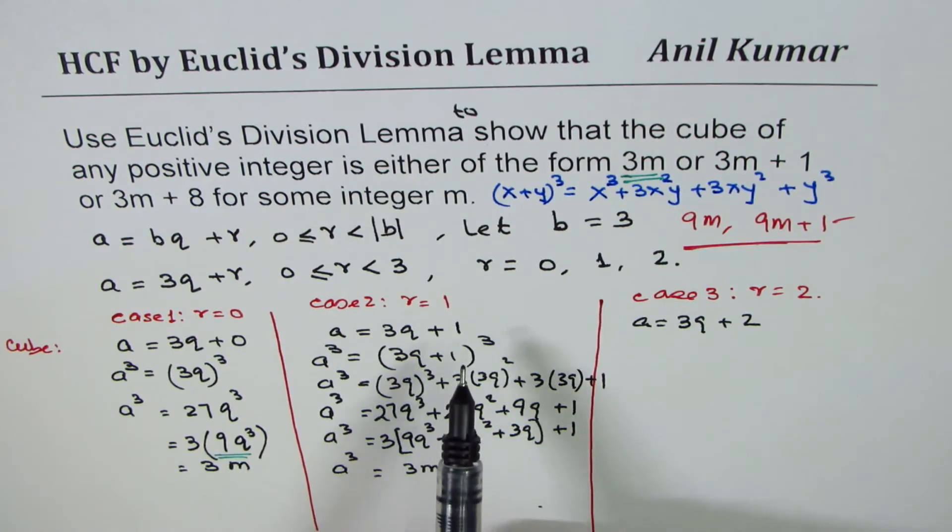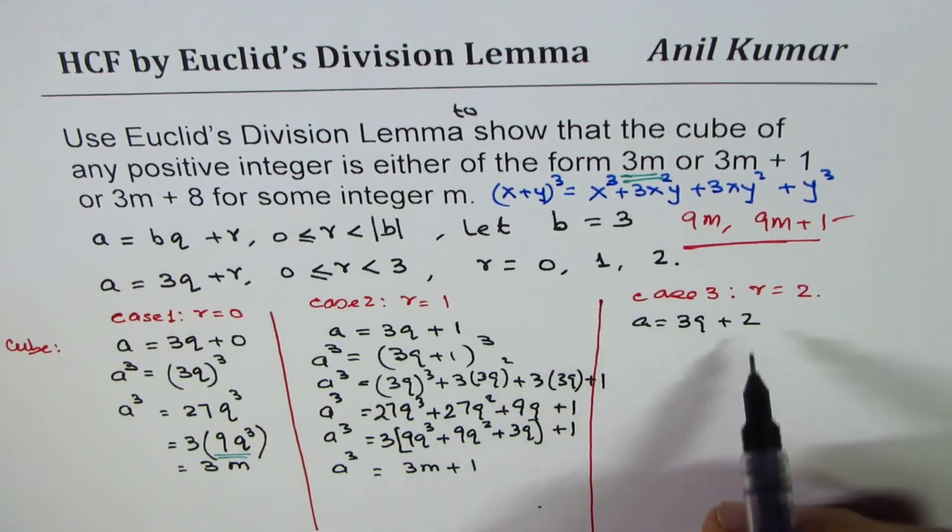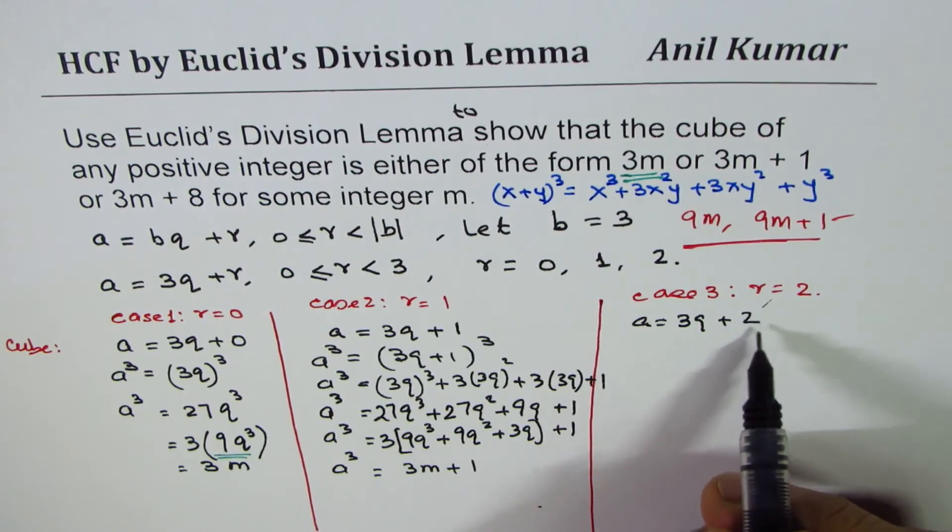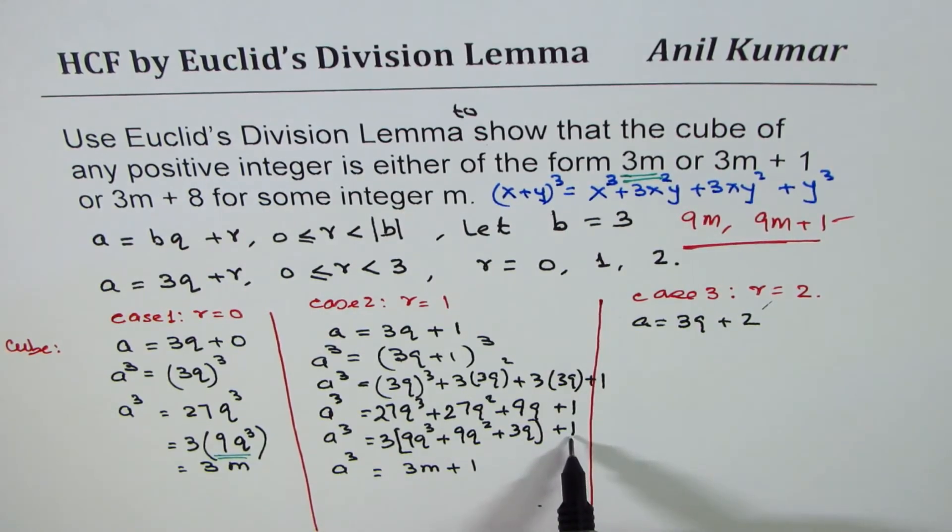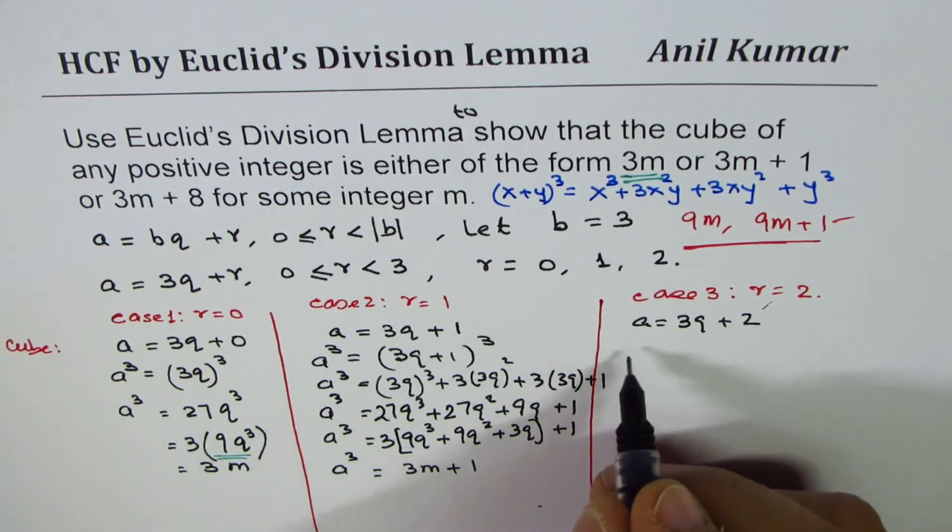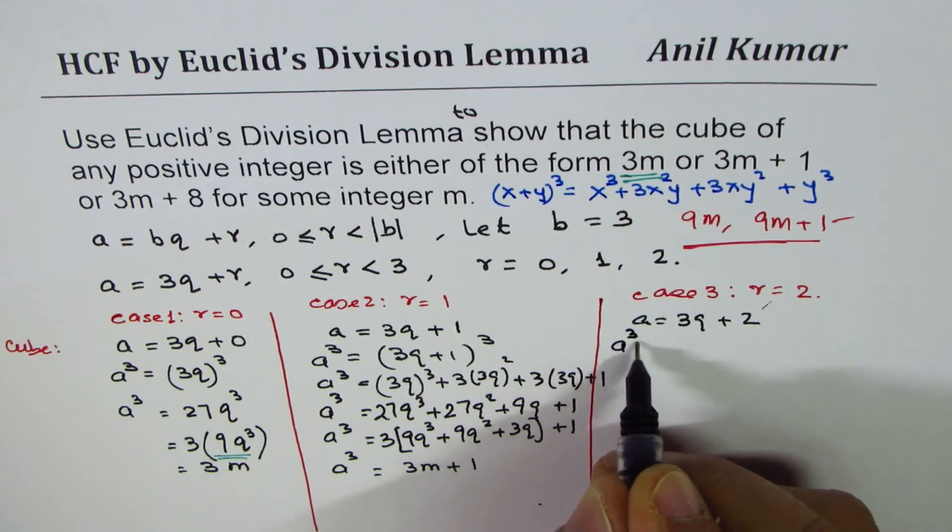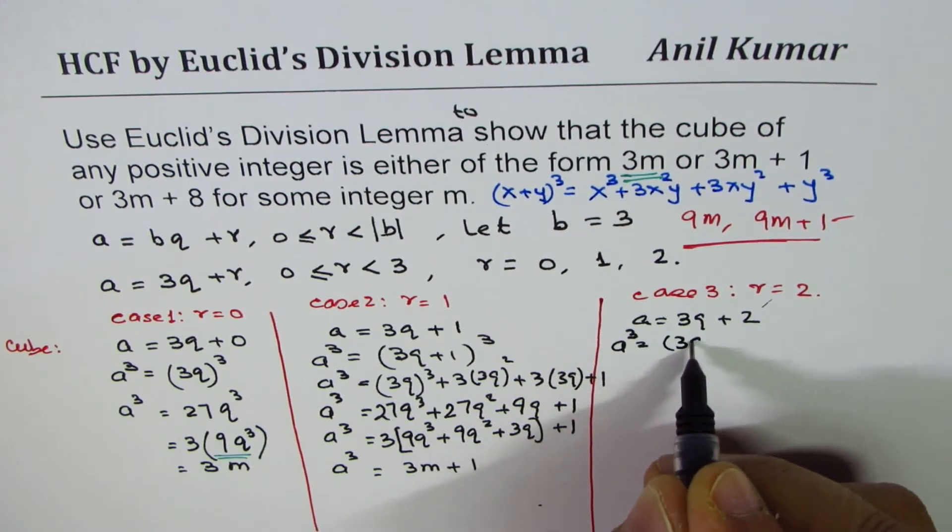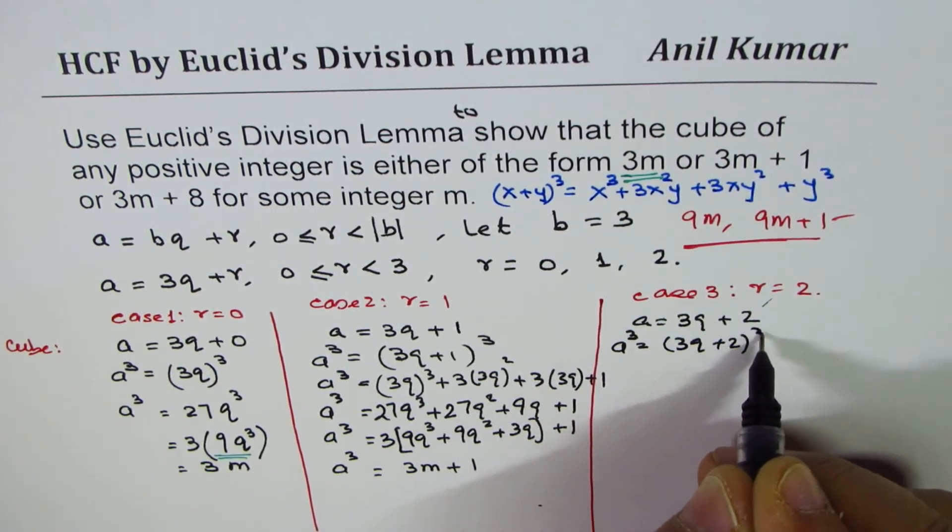Now let's go to the last one, which is 3M plus 8. 2 cube is 8, that gives you an idea. This number will be replaced by 8 and you get the answer. So you can actually pause the video and solve it. Let's cube both sides. So we get 3Q plus 2 whole cube.